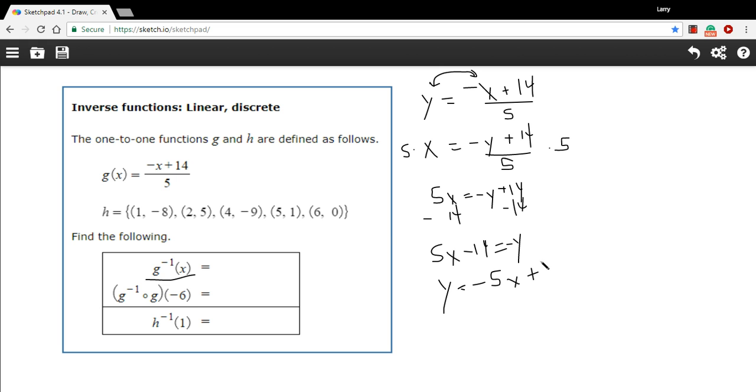That multiplying by negative 1 just changes all the signs, flips them all. So this is our inverse, and then I can replace the y with the g to the minus 1 of x. So our answer here is negative 5x plus 14.